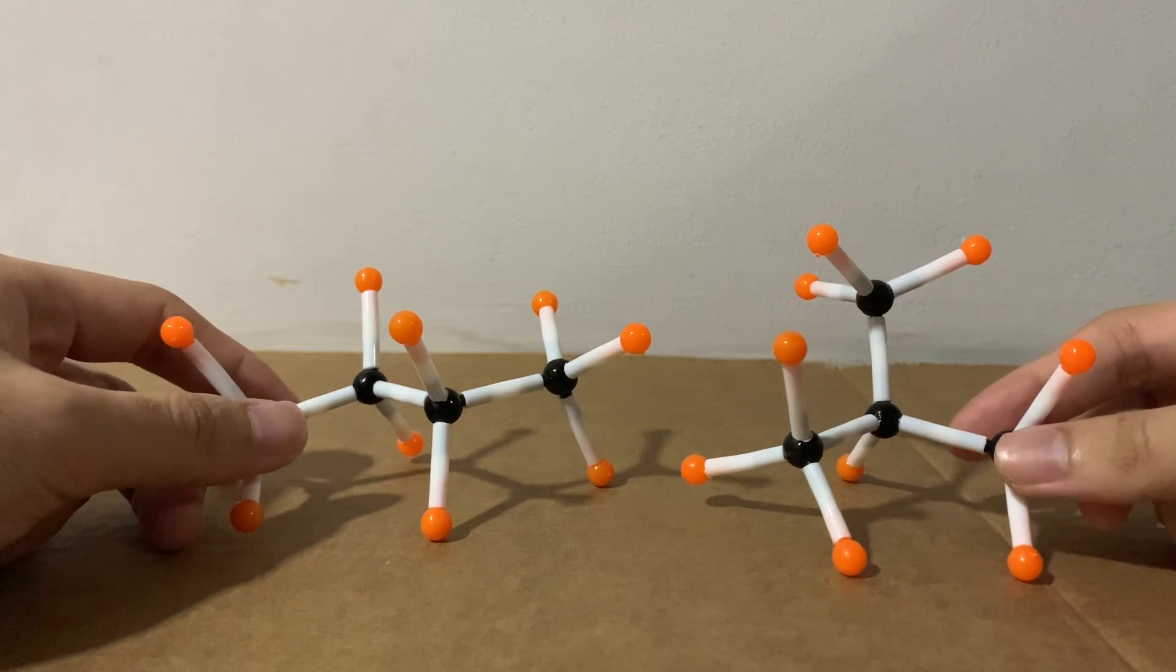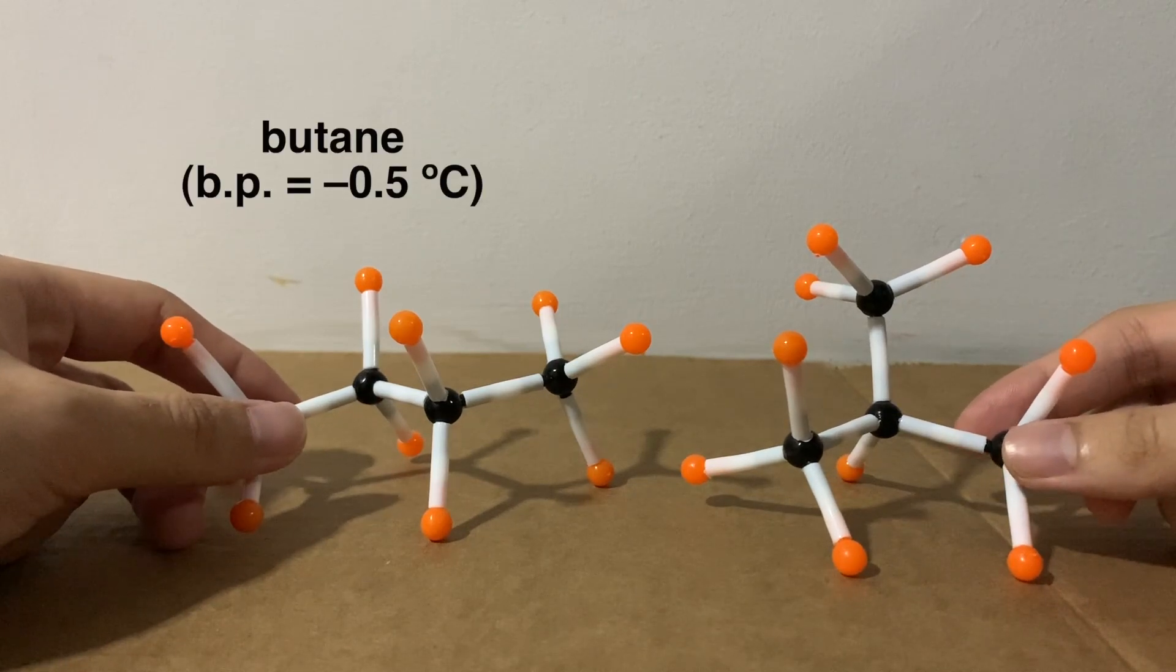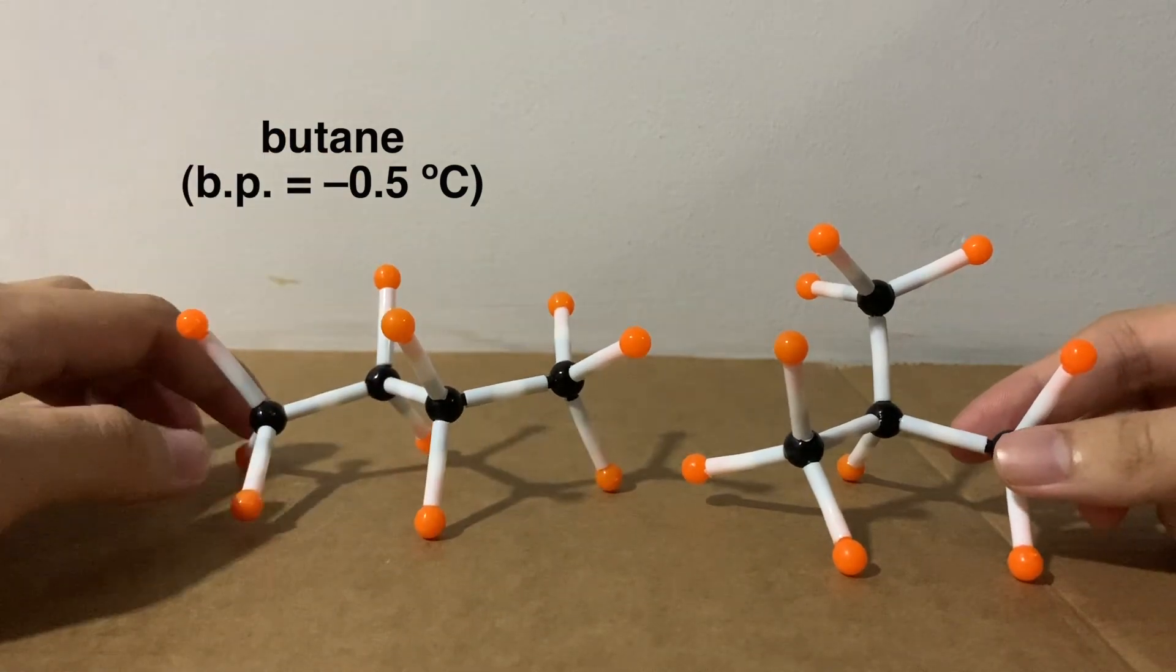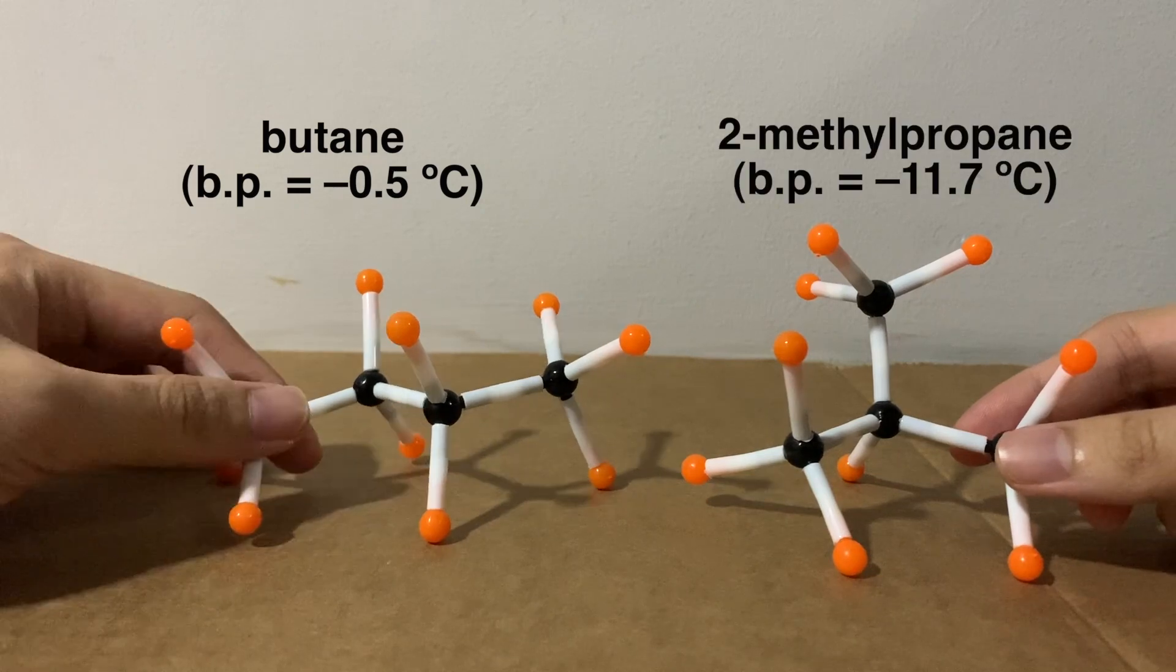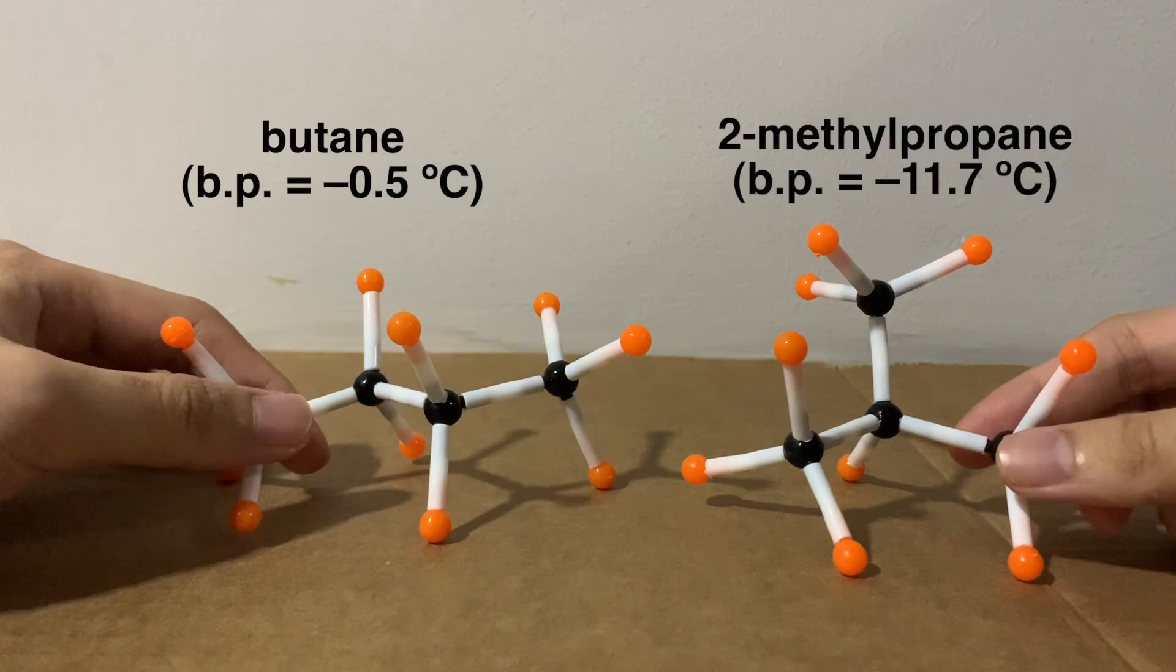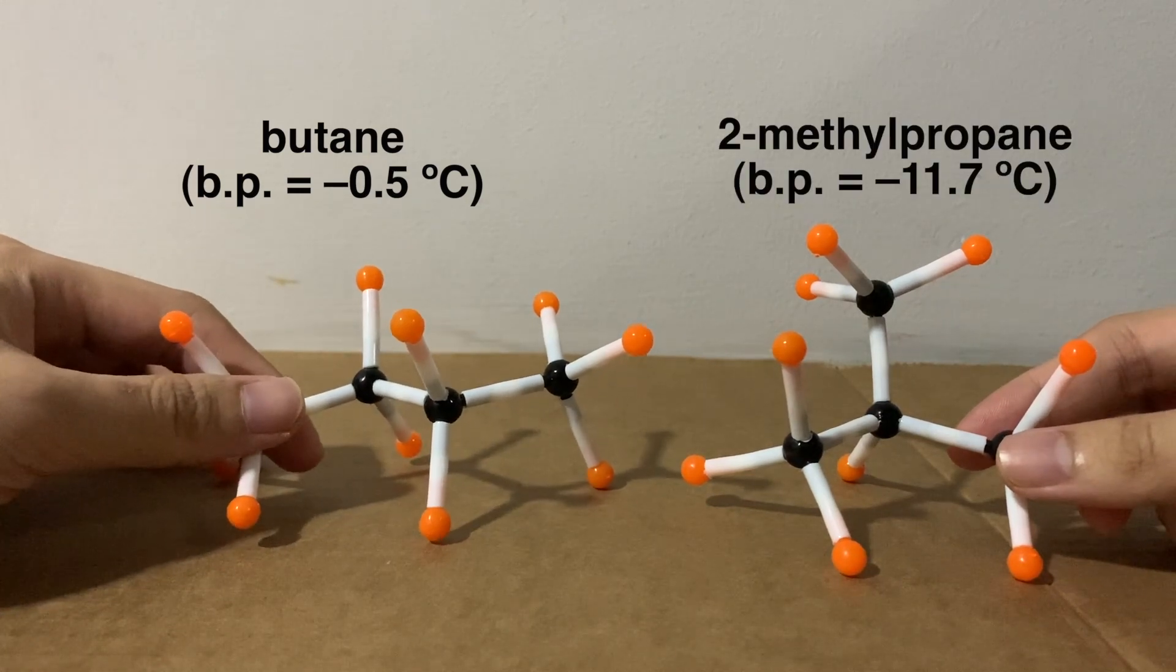And because of that, they differ in their physical properties. The straight chain butane has a larger surface area and therefore stronger intermolecular forces of attraction. This will lead to the straight chain alkane having a higher boiling point than the branch one.